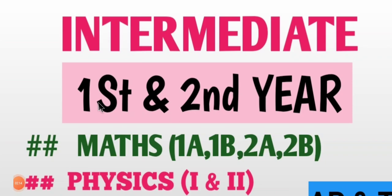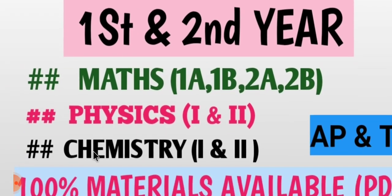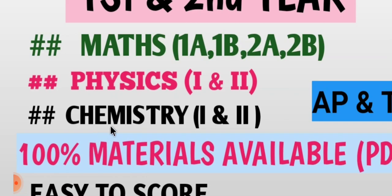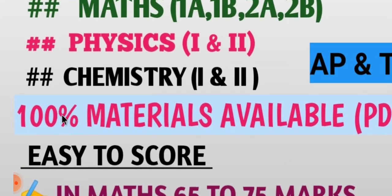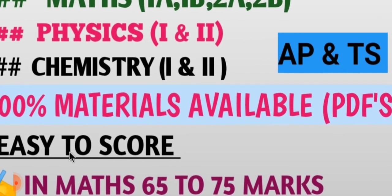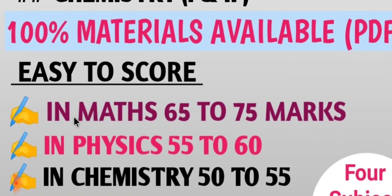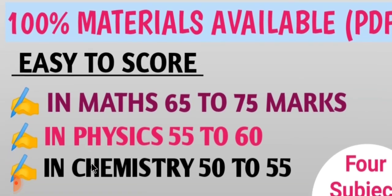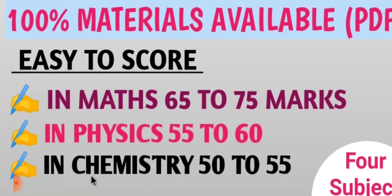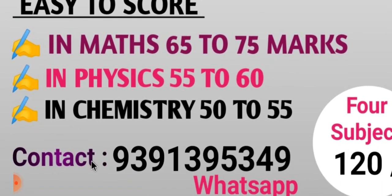Students, here we enter first year and second year study materials. There is maths 1A, 1B, 2A, 2B, physics first year and second year, and chemistry first year and second year - hundred percent self-study materials. PDF formula sheets are available for both AP and TS state boards. In maths you can score 65 to 75, in physics 55 to 60, and in chemistry 52 marks.